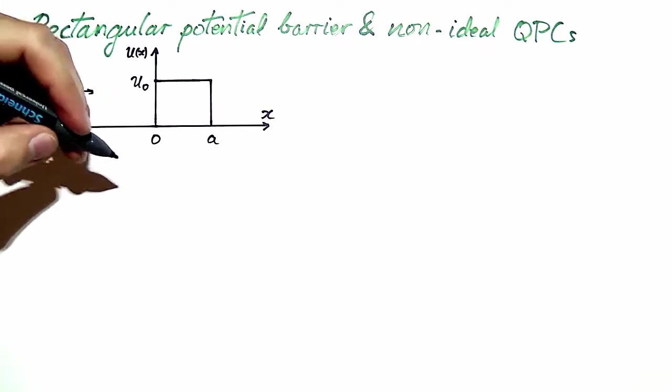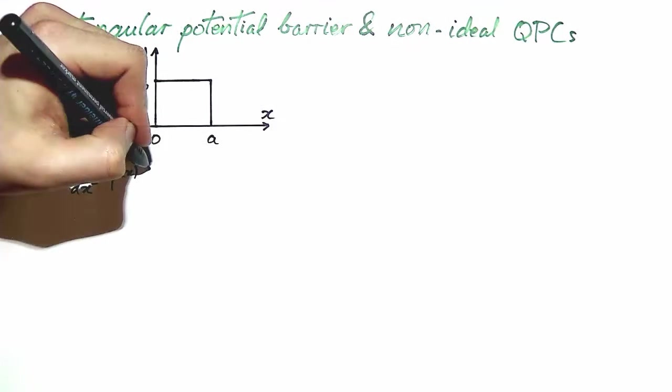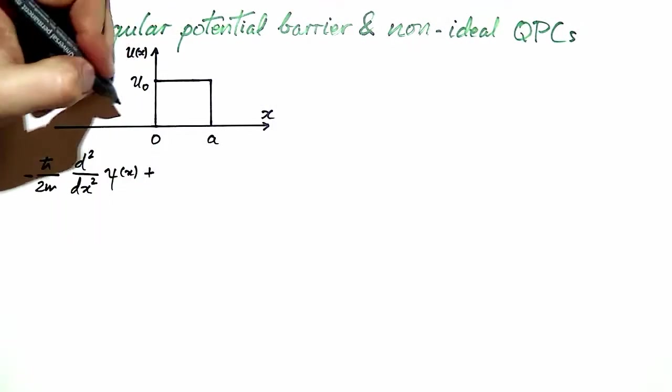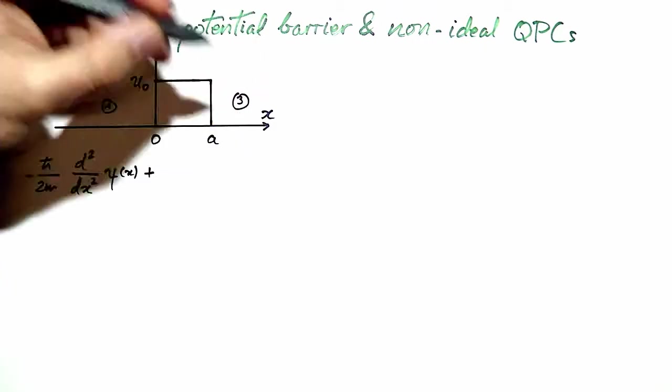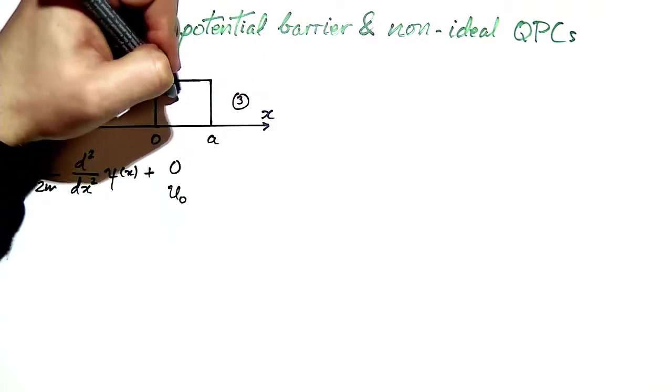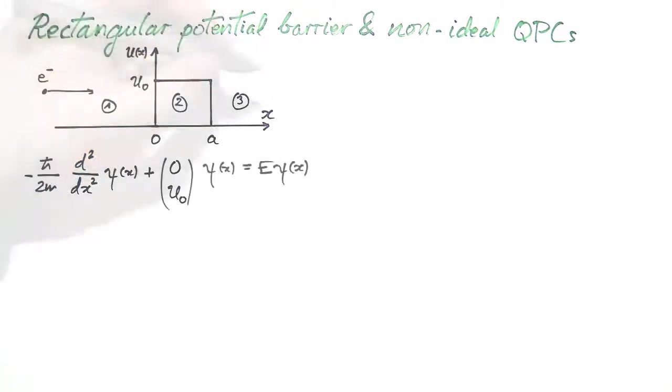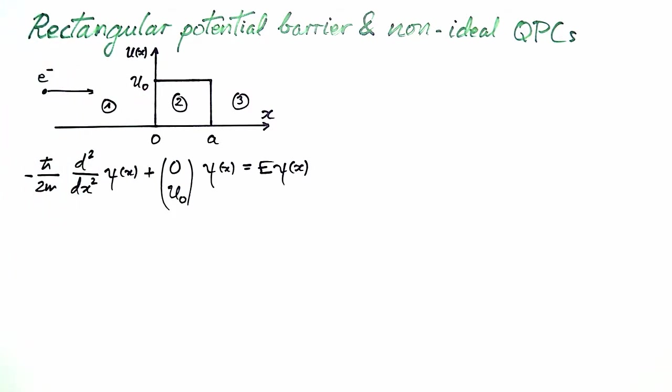Time independent Schrödinger's equation is given by a kinetic energy term plus a potential which is 0 outside the barrier in regions 1 and 3 and U0 in region 2 corresponding to the barrier. We consider situations in which the energy of the electron is larger than U0 and solve the equation with an exponential ansatz in each of the three regions.